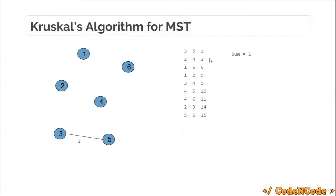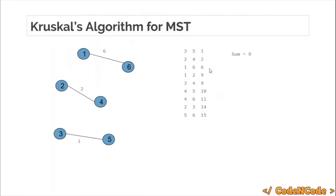We move on to the second edge: nodes 2 and 4 with weight 2. We check whether 2 and 4 are already connected — they are not, so we add this edge to our MST and increment the sum by 2. Next, nodes 1 and 6 are also not connected, so we connect them and add their weight to the total sum. We now have 3 edges with a total sum of 9.